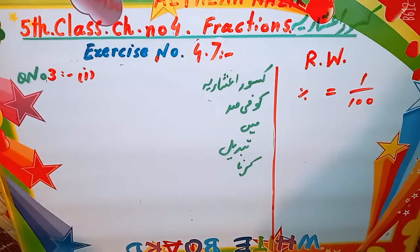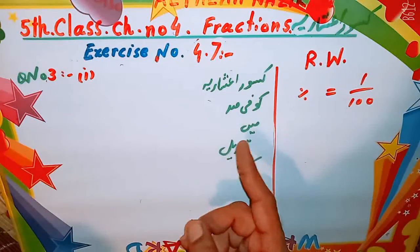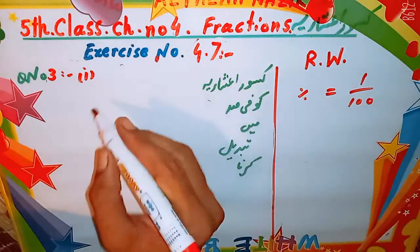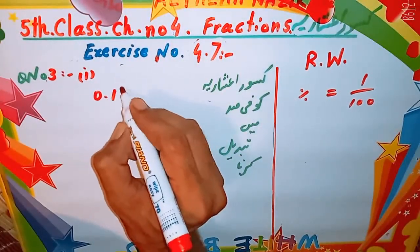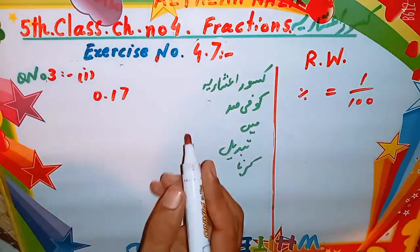تو اس میں ہے قصورِ اشاریہ کو فیصد کی صورت میں تبدیل کریں. یعنی قصورِ اشاریہ کو ہم نے فیصد میں تبدیل کرنا ہے. Today students, پہلا question ہے zero point one seven. تو اب قصورِ اشاریہ کو فیصد میں تبدیل کرنا ہے.